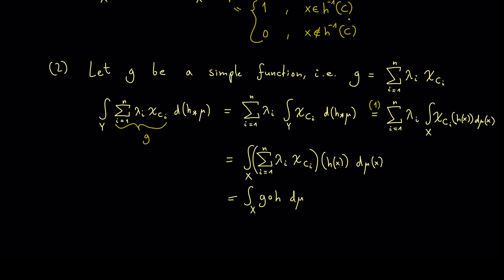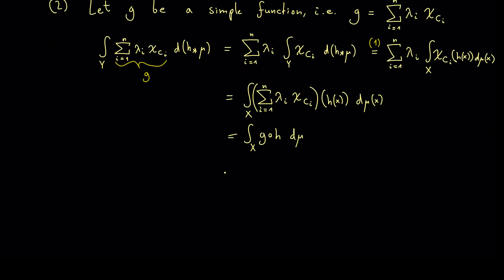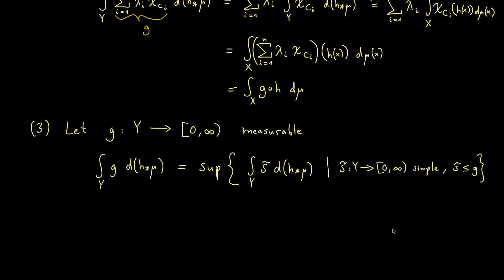And with this we have proven the substitution rule for all simple functions. Obviously we want to generalize that even more and just use a measurable function g. However it's easier to write it down first for non-negative functions. At this point please recall the definition of the Lebesgue integral which just needs simple functions. The integral of the function g is just given by the supremum of the integrals of some chosen simple functions. Maybe here it's helpful to denote the simple functions by s tilde. Hence we write down s tilde is a non-negative simple function and it should lie point wisely simply below our function g.